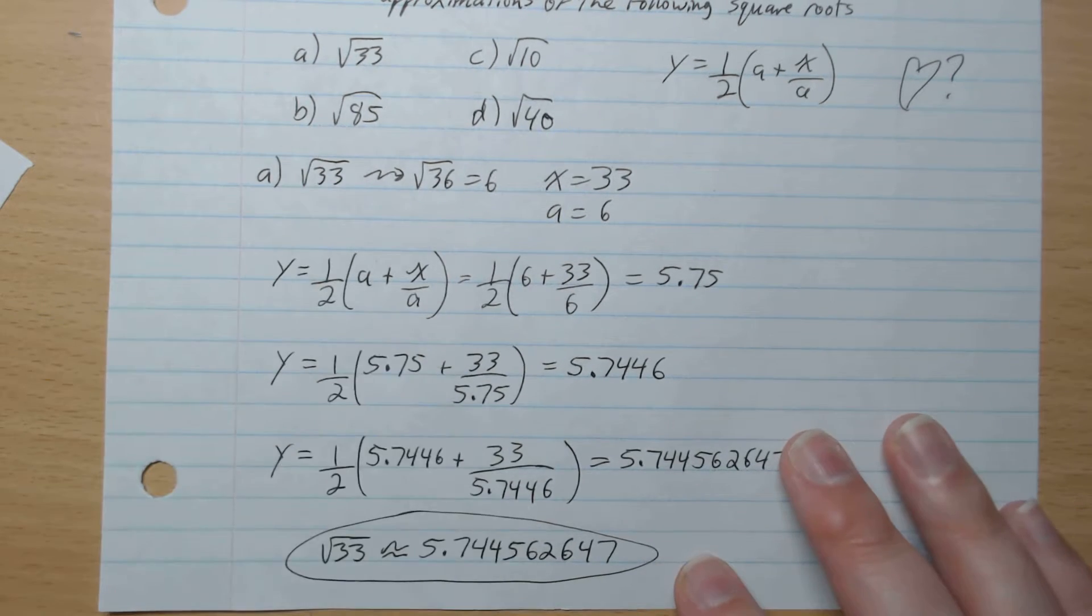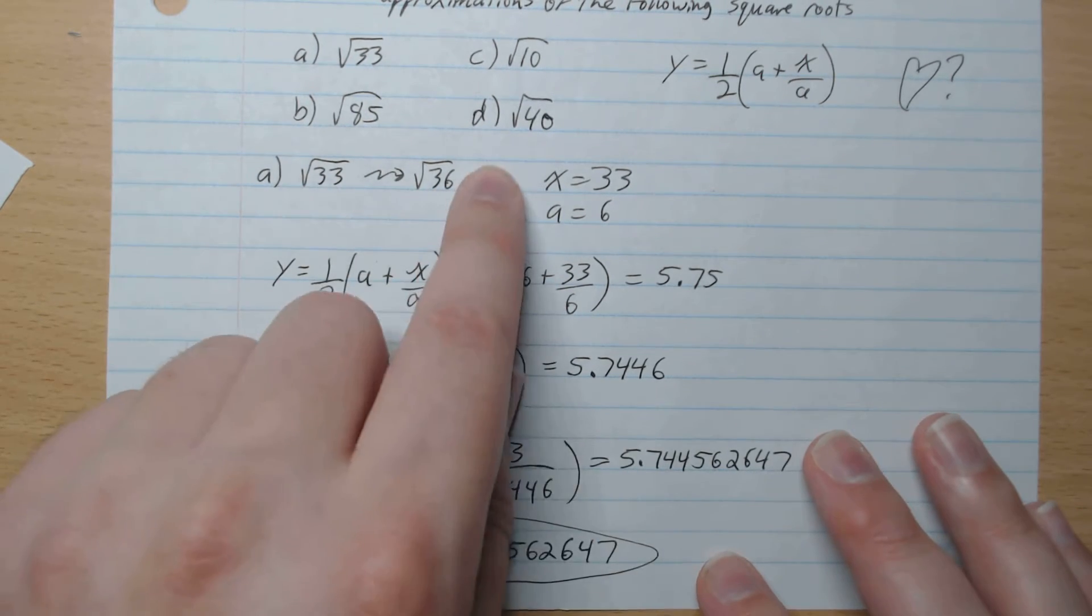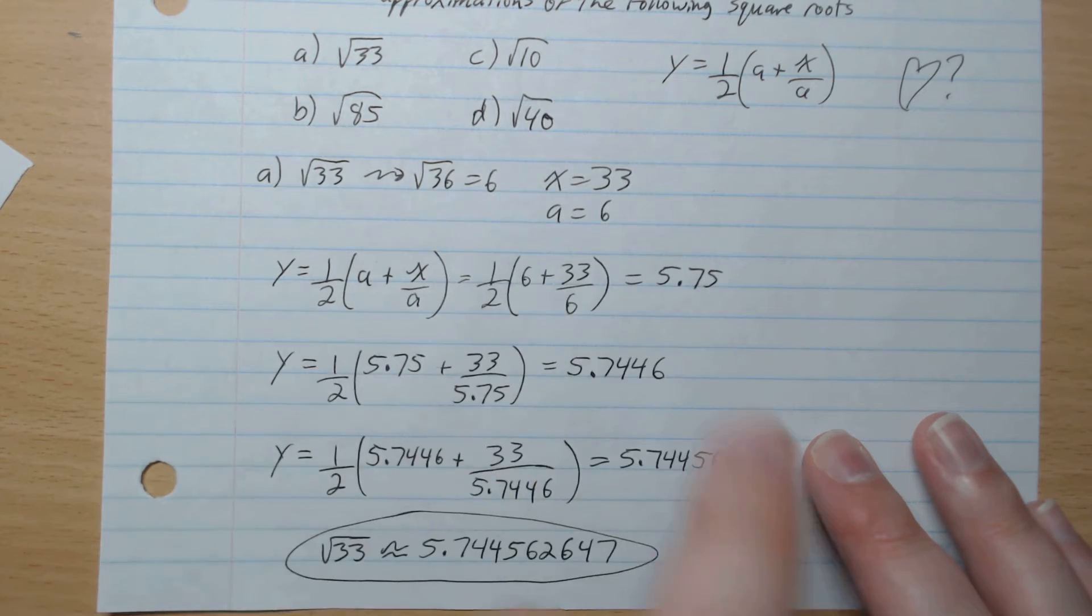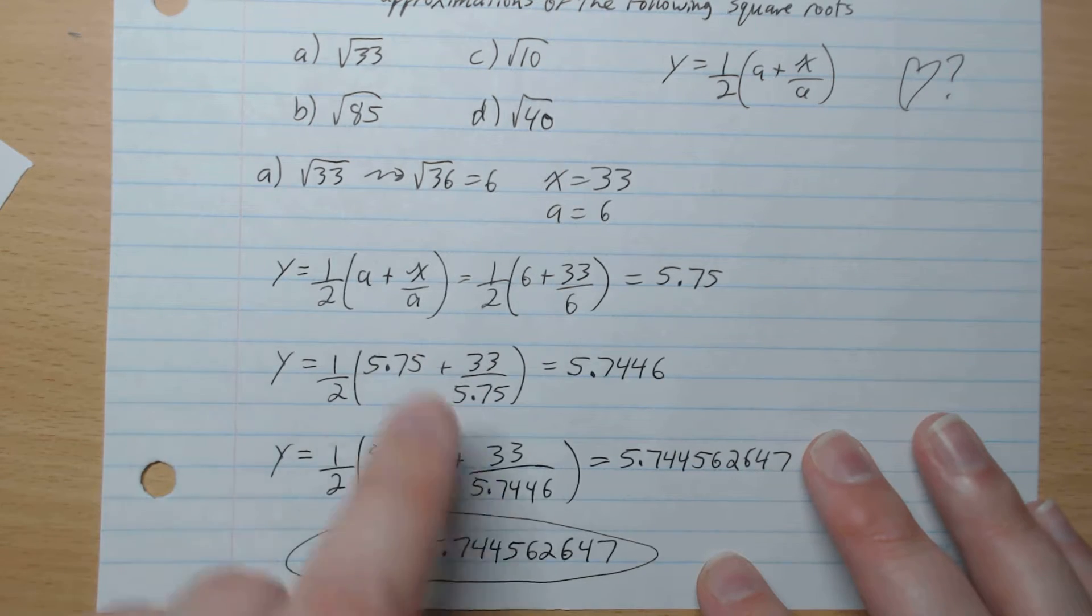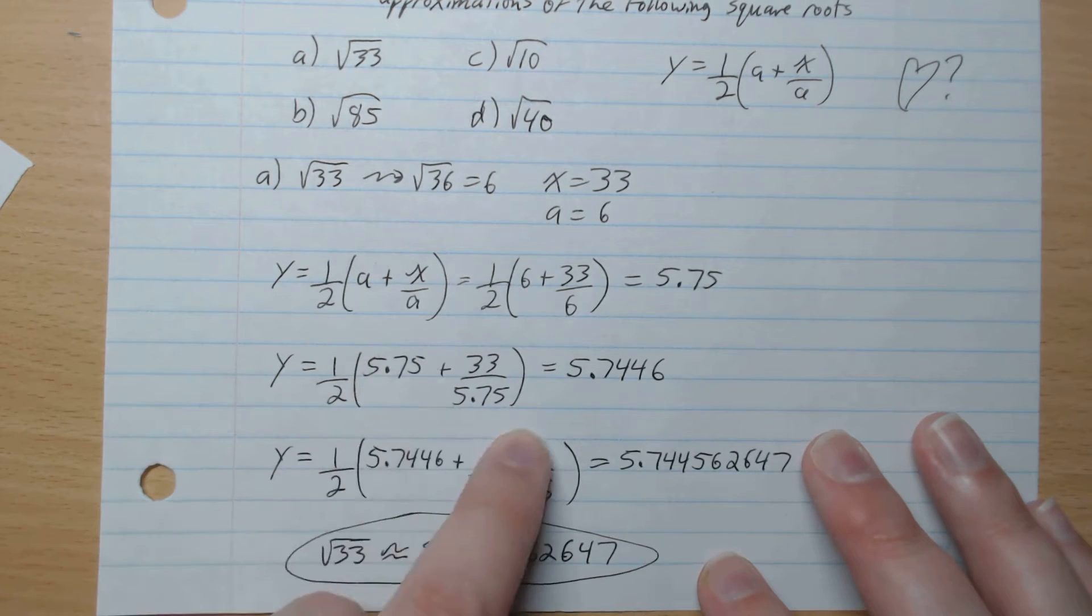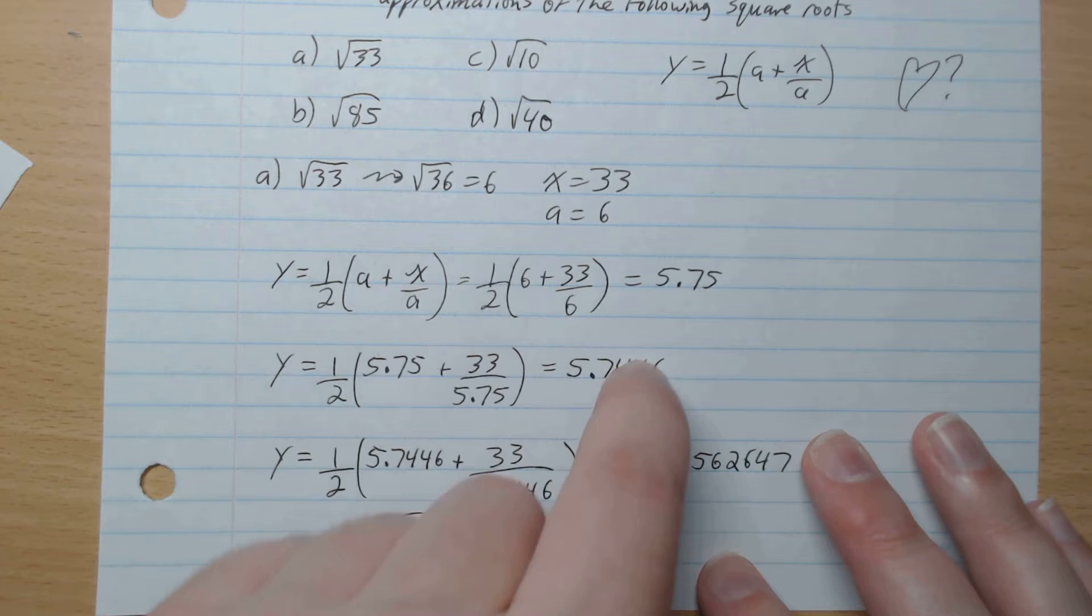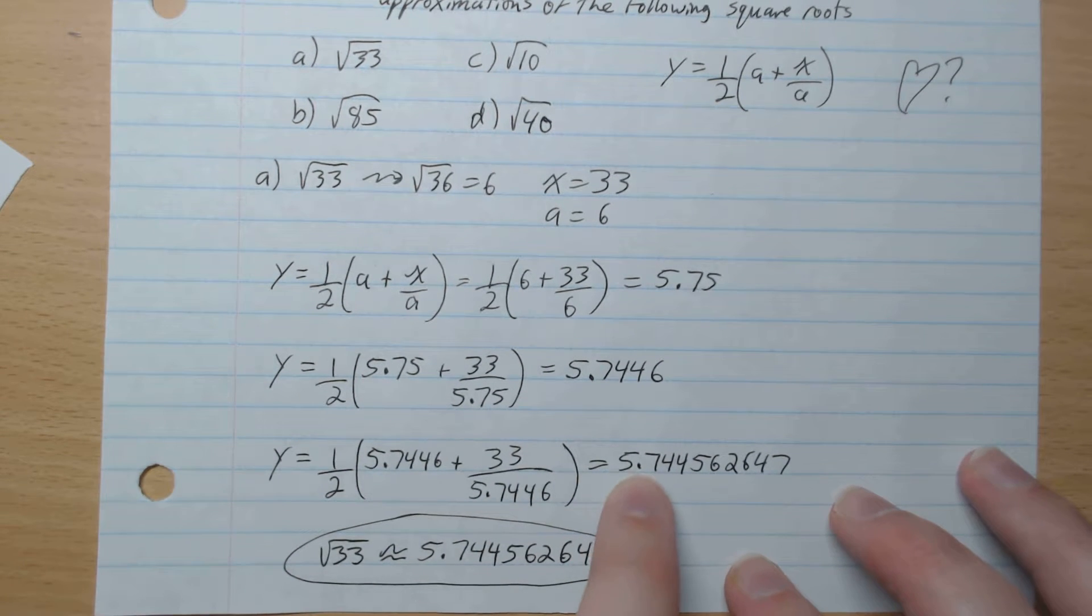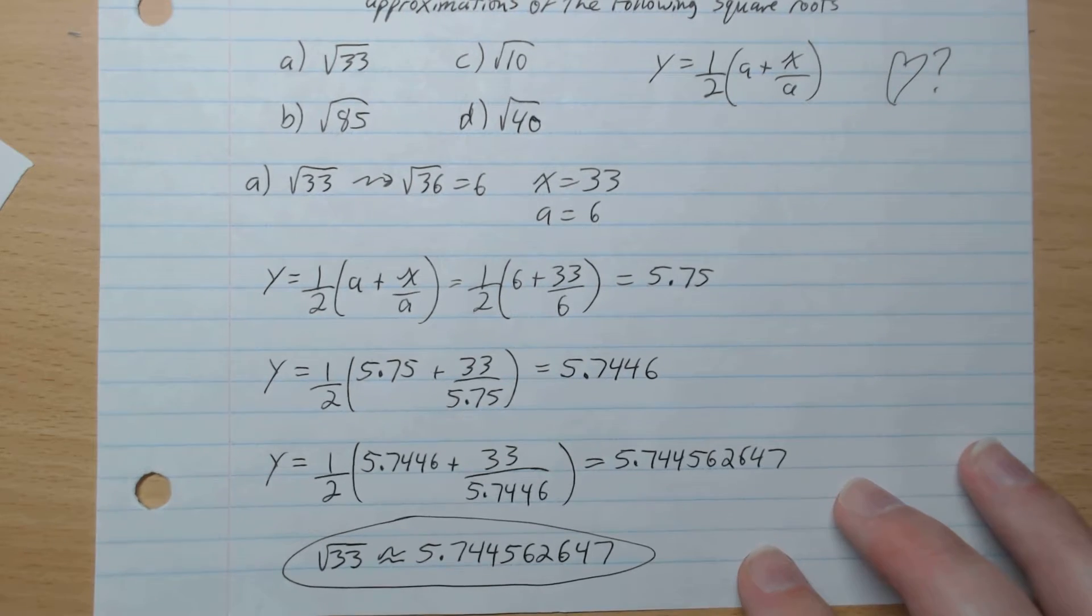A. So we got root 33, closest is root 36, which gives 6. So a is 6, and x is 33. We plug that in, we get 5.75. We plug that in, and we get 5.7446. And then we plug that in, and we get 5.744562647.